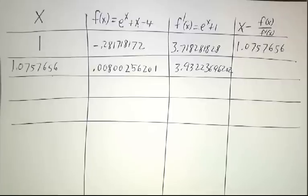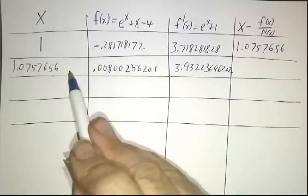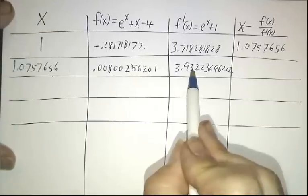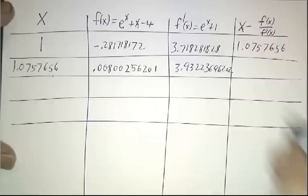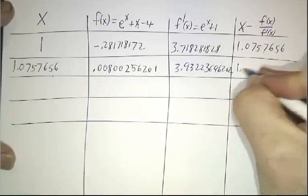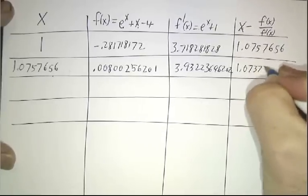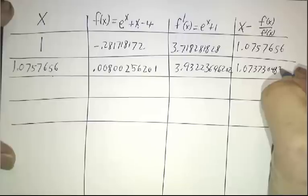And you turn the crank one more time. You take this minus this divided by this. And you get a better answer. You get 1.07373048307.